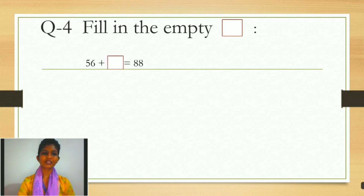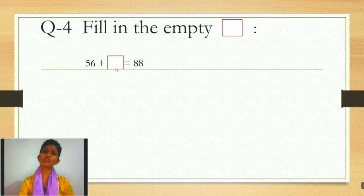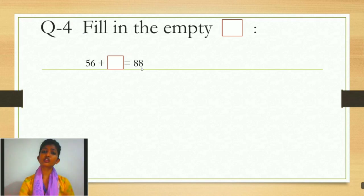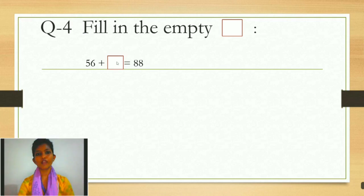56 plus box is equals to 88. We have to find out the number in this box. We are having two numbers: 56 and 88. We will use these two numbers to find out the missing number. Hum yeh do number ke help se jo missing number hai woh find out karenge.